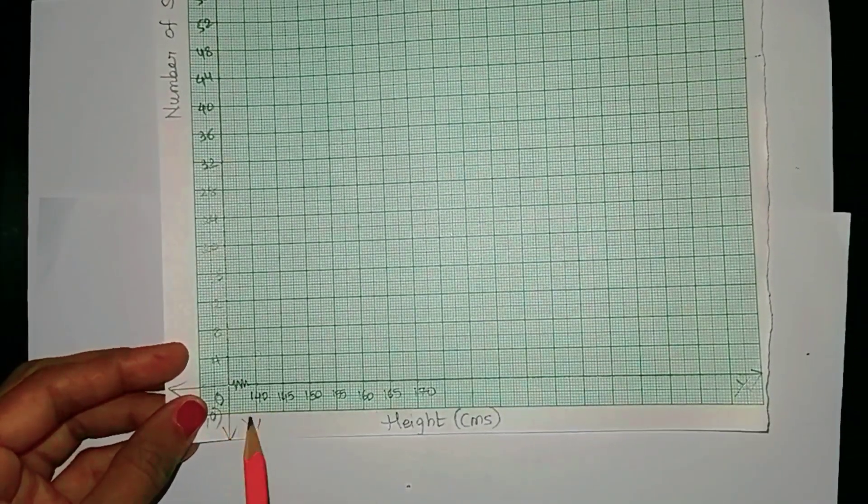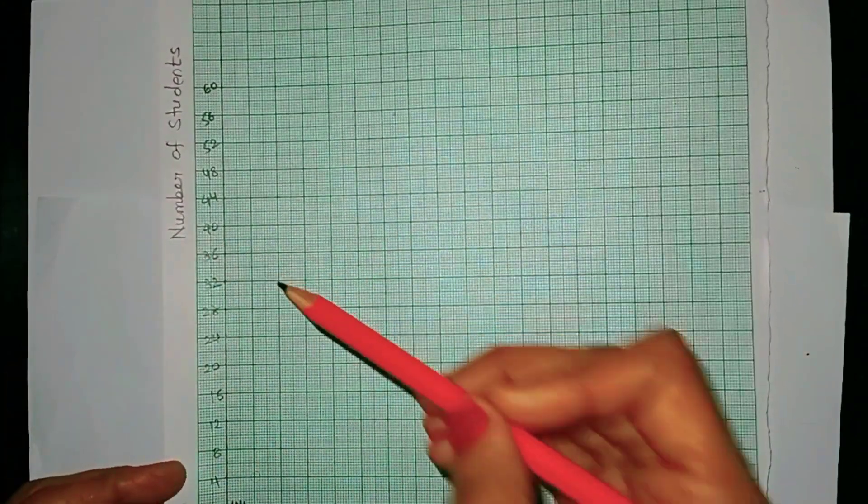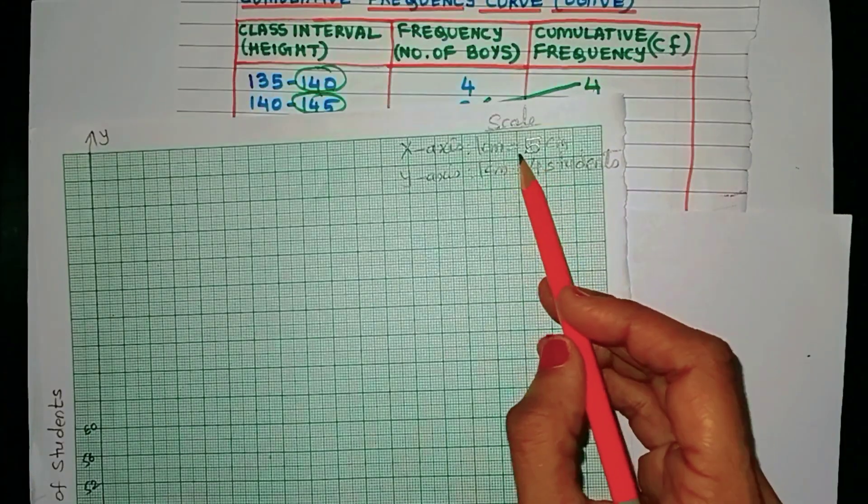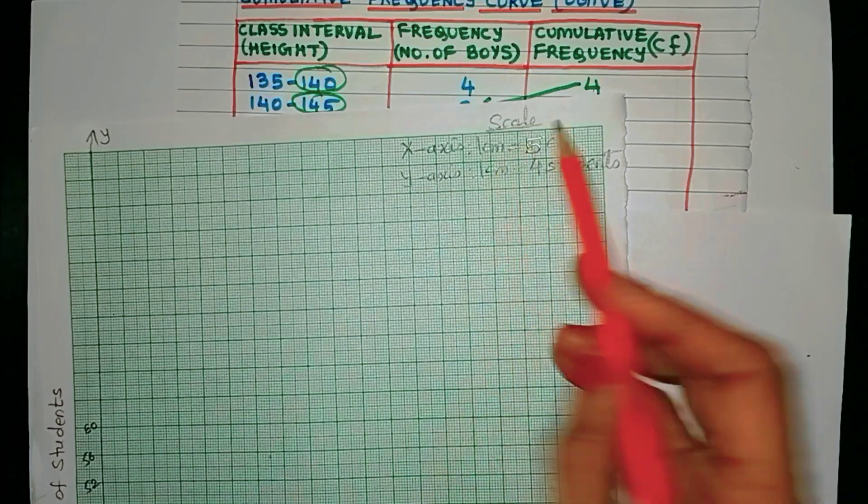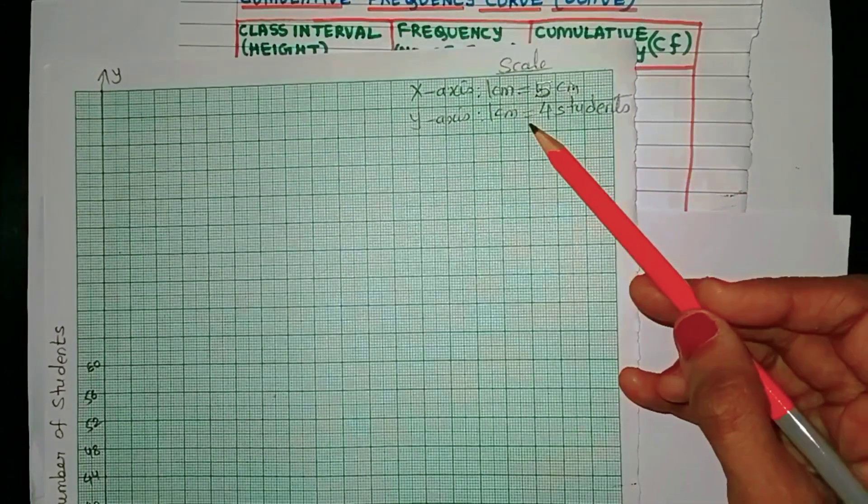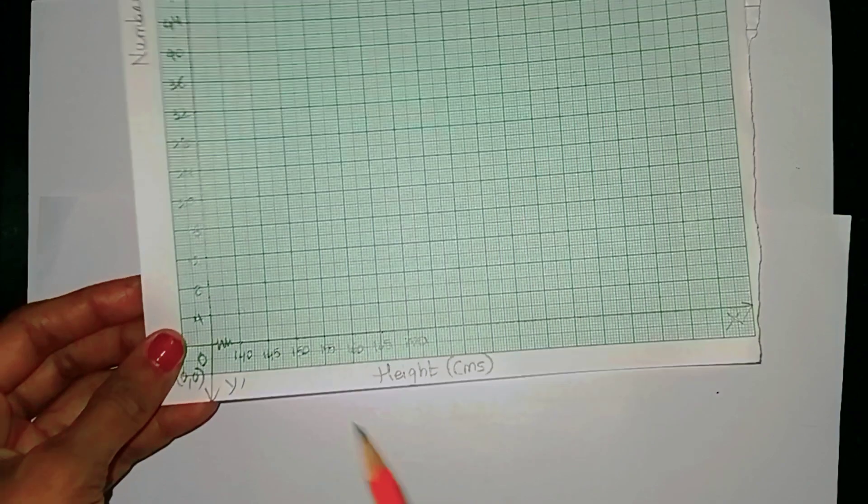Remember, it's the CF and not the frequency. So I've already marked the upper limits of all the class intervals here, and these are the cumulative frequency values.